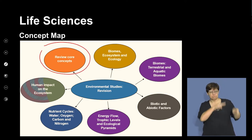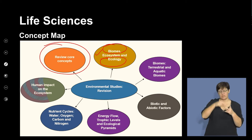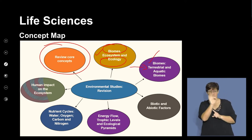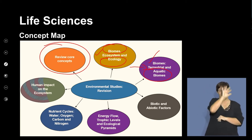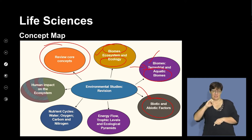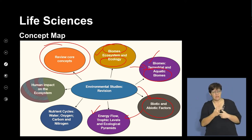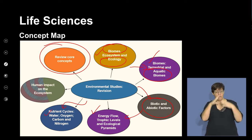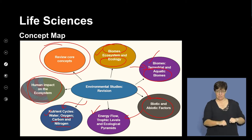Let's review the main concepts. We've discussed the concept of biomes and ecology, where we've studied different factors and how they influence living organisms. We spent some time looking at biomes, with special focus on the terrestrial biomes in South Africa. We also recognize that there are aquatic biomes. We went on to biotic and abiotic factors, energy flow through ecological pyramids, and the concept of trophic levels. We discussed nutrient cycles with special emphasis on the water, oxygen, carbon, and nitrogen cycles. Throughout, we've mentioned the impact that humans have had on ecosystems.